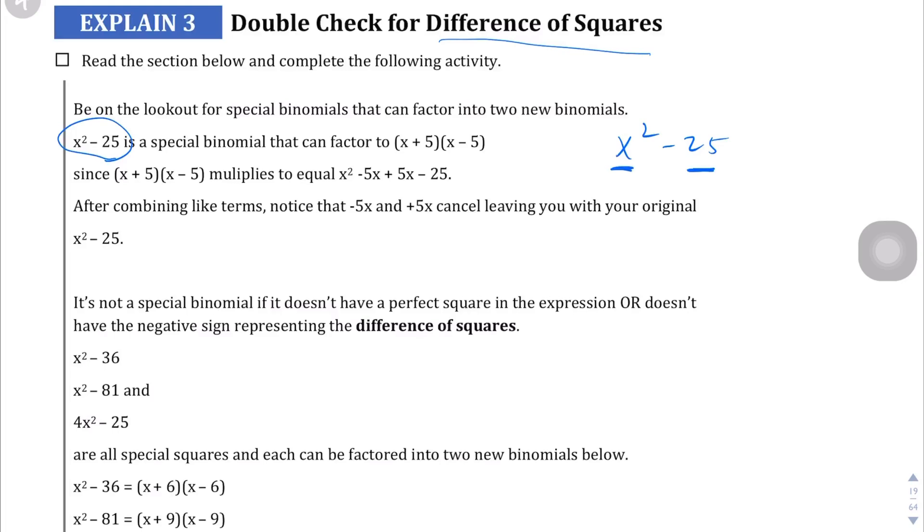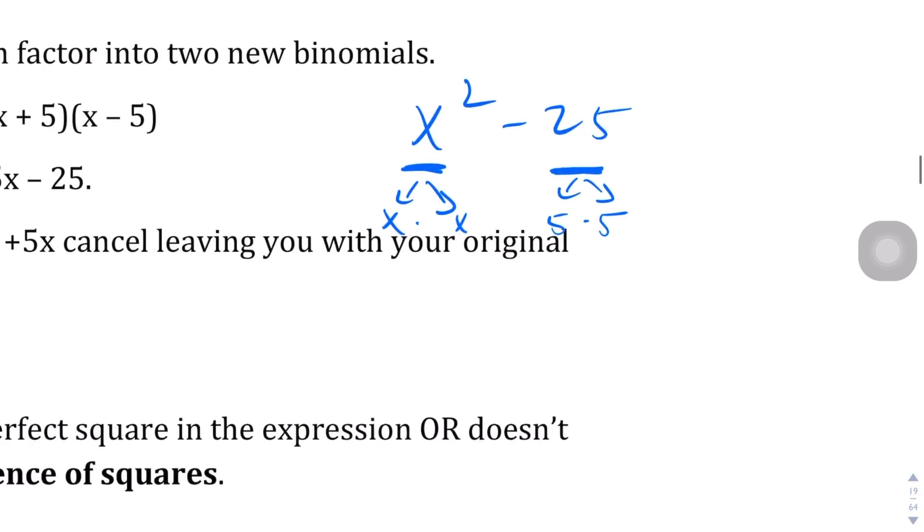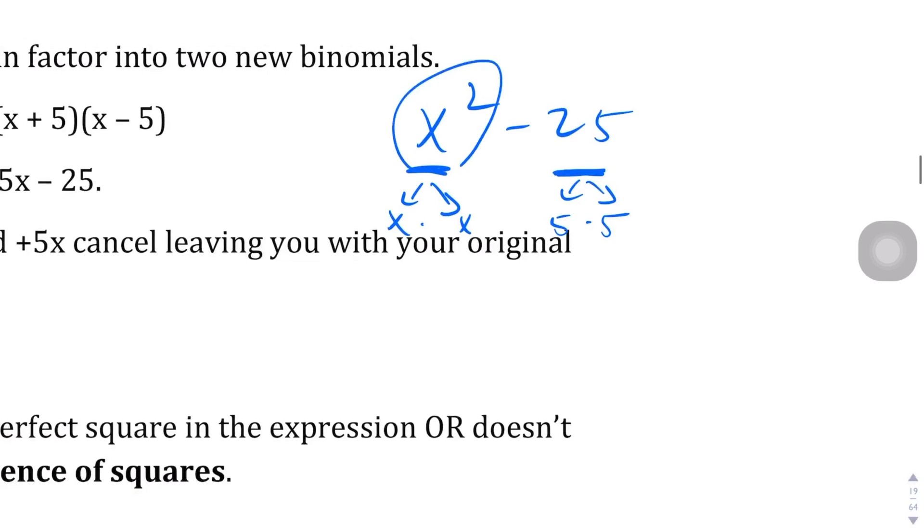For example, x² is a perfect square because you can also rewrite this as x times x, and 25 is also a perfect square because it's 5 times 5. So whenever you have two perfect squares that are being subtracted, hence the name difference of squares...